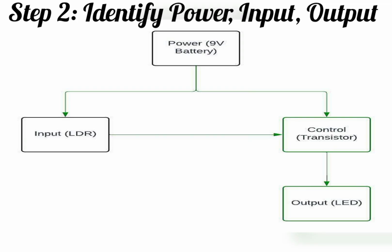The output is the LED that turns on or off. The 9-volt battery feeds both the input and the control part, which is a transistor. The LDR sends a signal to the control — the transistor — and then the transistor decides whether to allow current to flow to the output, which is the LED. With a block diagram, you'll be able to represent your schematic diagram.